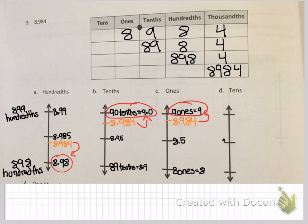Now moving on to tens. This number will fit between 0 and 10, so at the bottom you have 0 tens, which equals 0. At the top you have 1 ten, which equals 10. In the middle you have 5. Your number goes toward the top, so you're rounding up to 10.